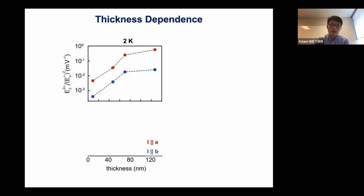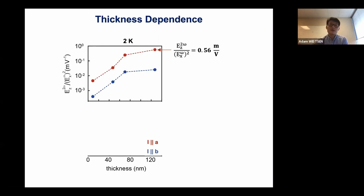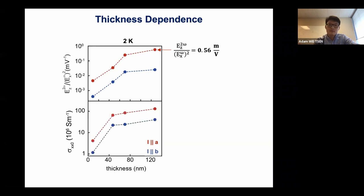Why is the A axis always larger? The largest strength we see is on the order of 0.56 meters per volt, which is about nine orders of magnitude larger than the in-plane measurements in WTe₂ — which is why I'm calling this a giant effect. If we look at the residual conductivity, it follows the same pattern: decreasing with decreasing thickness, and the A axis is always larger than the B axis.